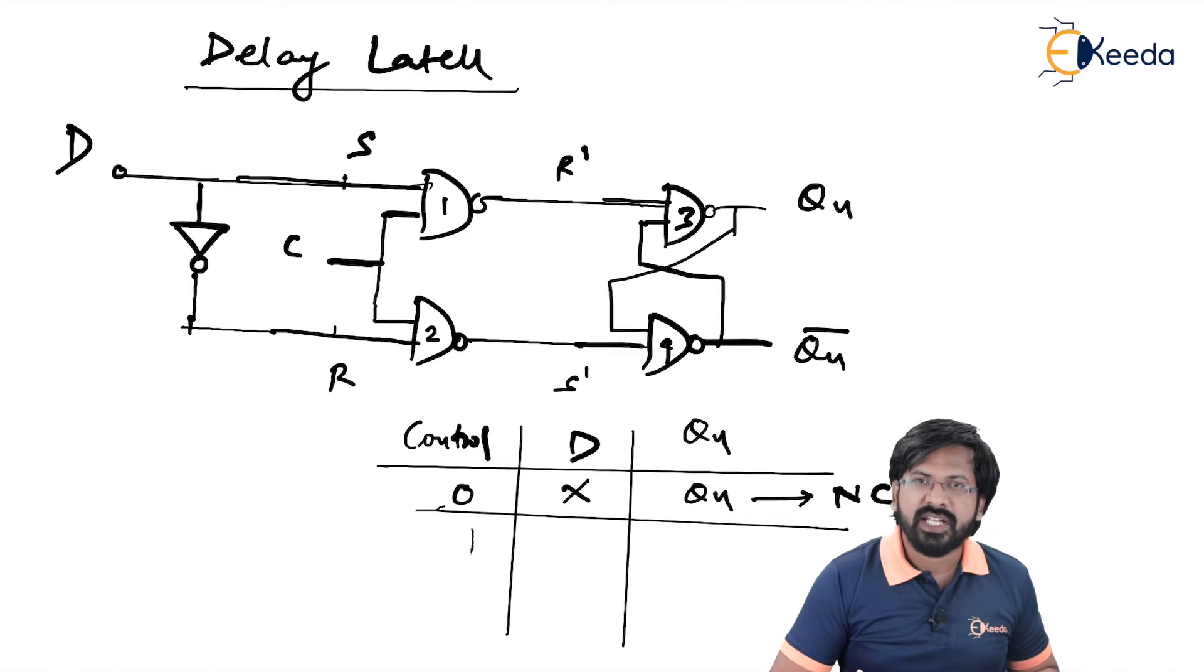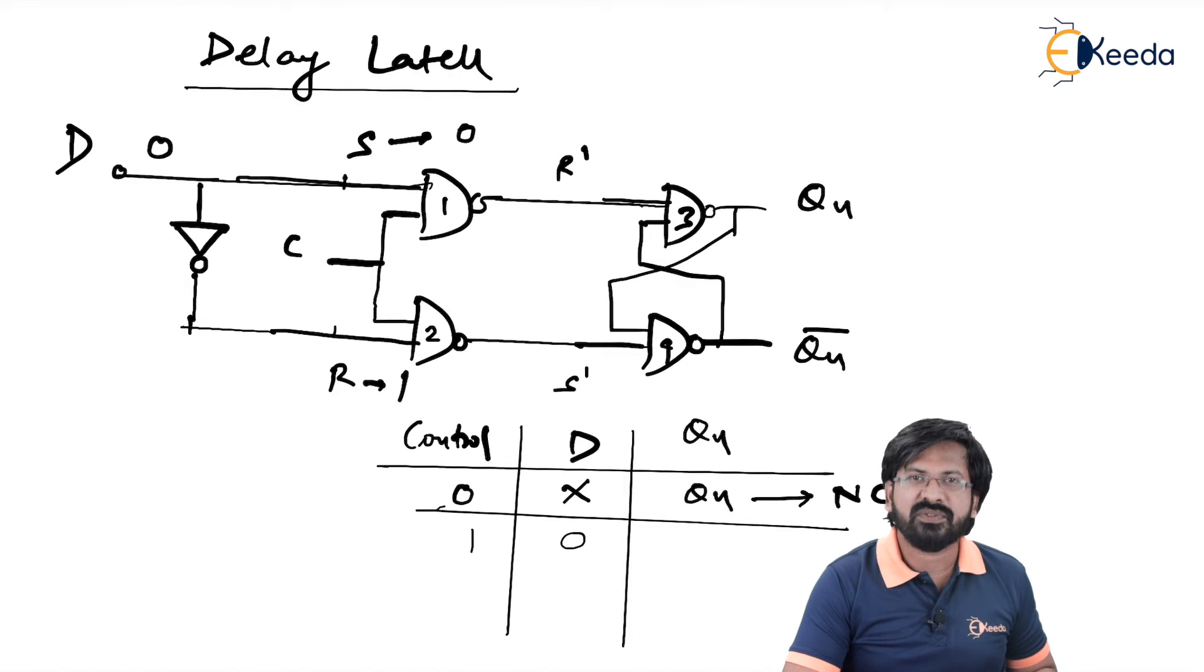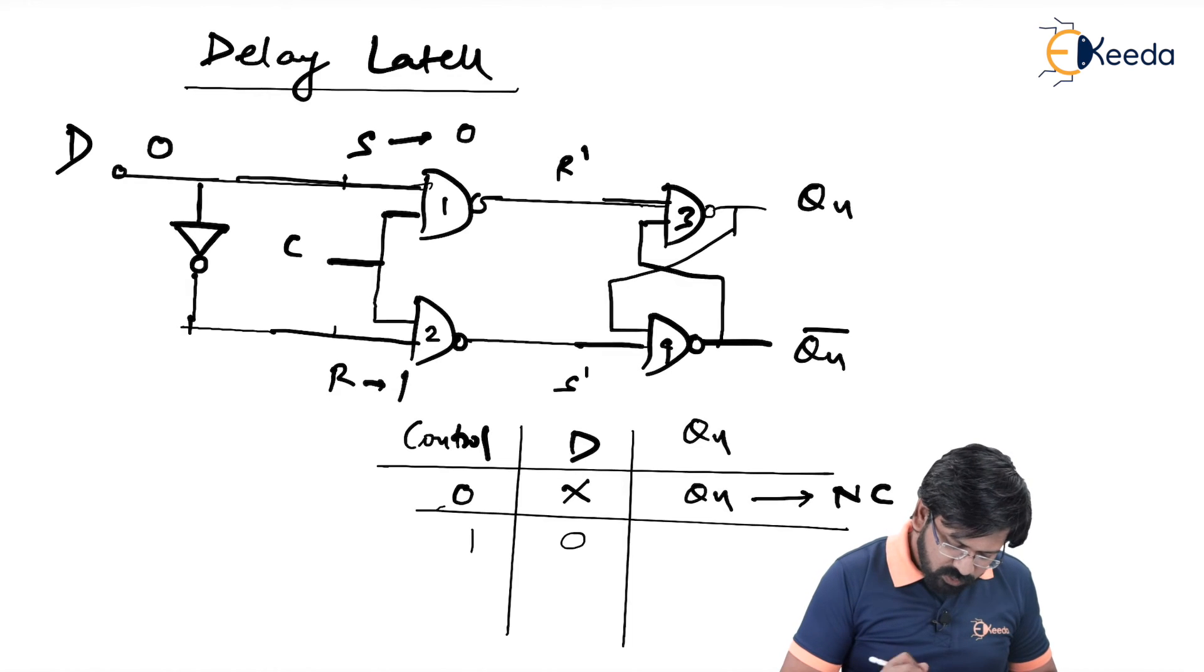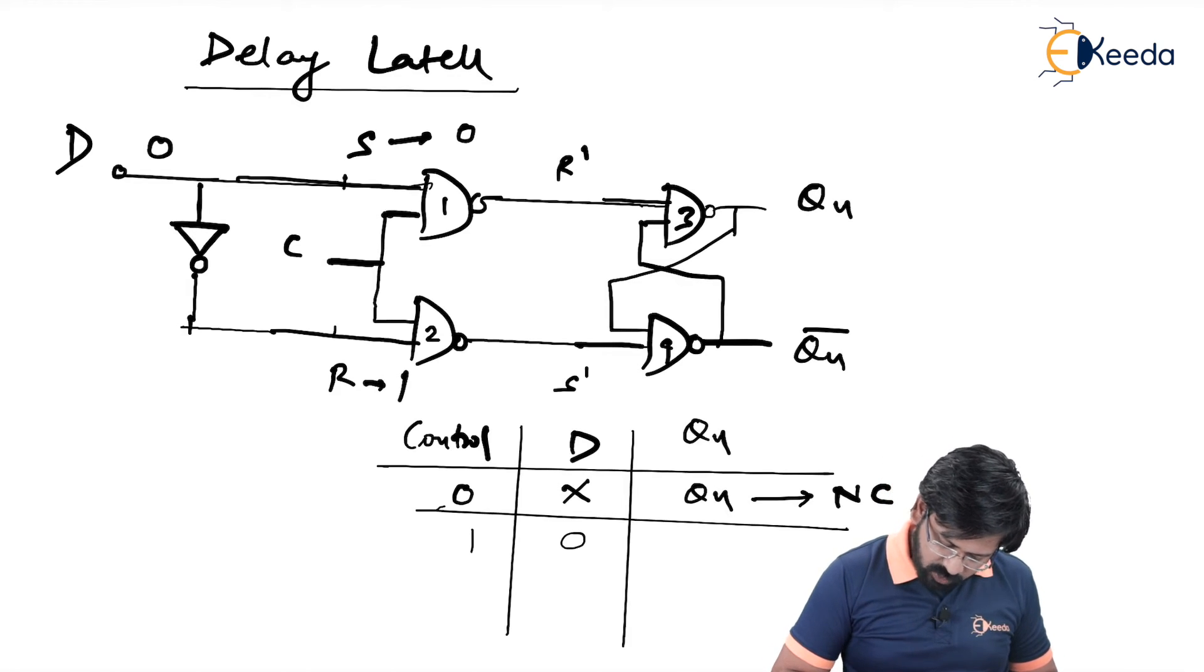So let us see what happens in next case. When control equal to 1, then the value of D makes sense. So let us assume D equal to 0. Observe, when D is equal to 0, applied here, this S becomes 0 and R becomes 1. What is the reason? Because of the NOT gate. It is going to invert this 0 to 1. So since S equal to 0, R equal to 1, you have to remember when R equal to 1, it gets into reset state and therefore output equal to 0. That is called as a reset state.